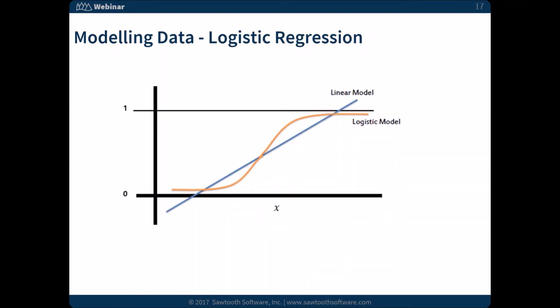In our case, we're not dealing with a continuous variable — we're dealing with a discrete outcome. Either a concept is chosen or it's not. So instead of a linear model, we use a logistic regression curve, often used to fit discrete outcomes — something happens or it doesn't. It could also be something like temperature applied to a popcorn kernel and whether or not it pops.